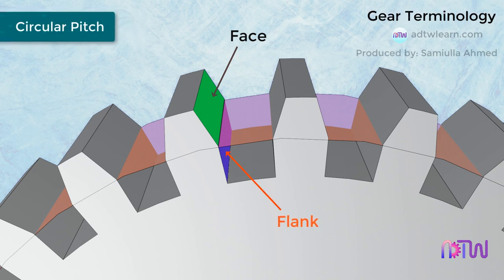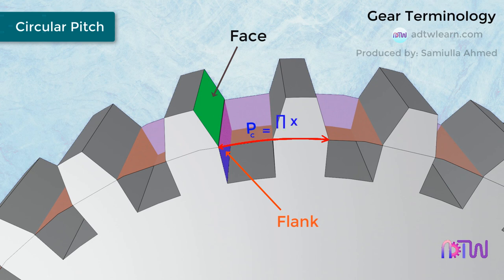Circular Pitch. The distance between a point on a tooth to the same point on an adjacent tooth, measured along the circumference of the pitch circle, is known as the circular pitch. Circular pitch is denoted by p_c, and given by: p_c equals pi multiplied by the pitch circle diameter, divided by the number of teeth.